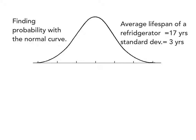Here's an example using refrigerators. The average lifespan of a refrigerator is 17 years. That doesn't mean that all refrigerators will stop working after 17 years, of course. A way to explain how reliable the product is is by using the standard deviation. With a standard deviation of 3 years, it means that most refrigerators will last between 14 and 20 years.